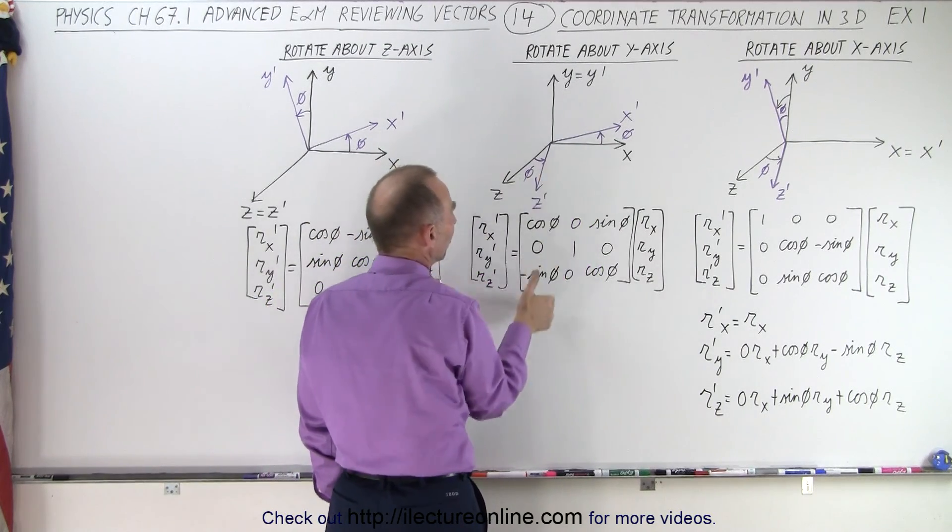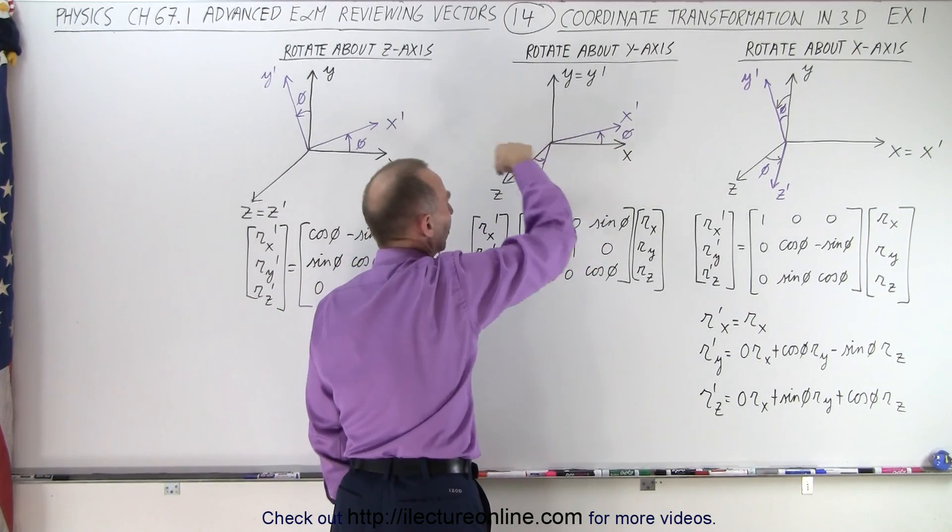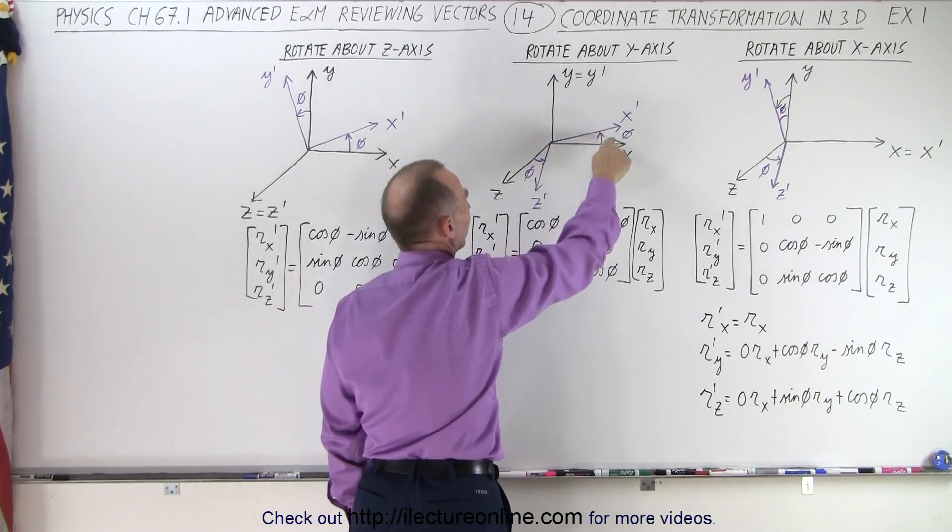Now we rotate it about the Y axis. So put your thumb straight up and you can see that the X rotates around this way and the Z rotates around this way through an angle of phi.